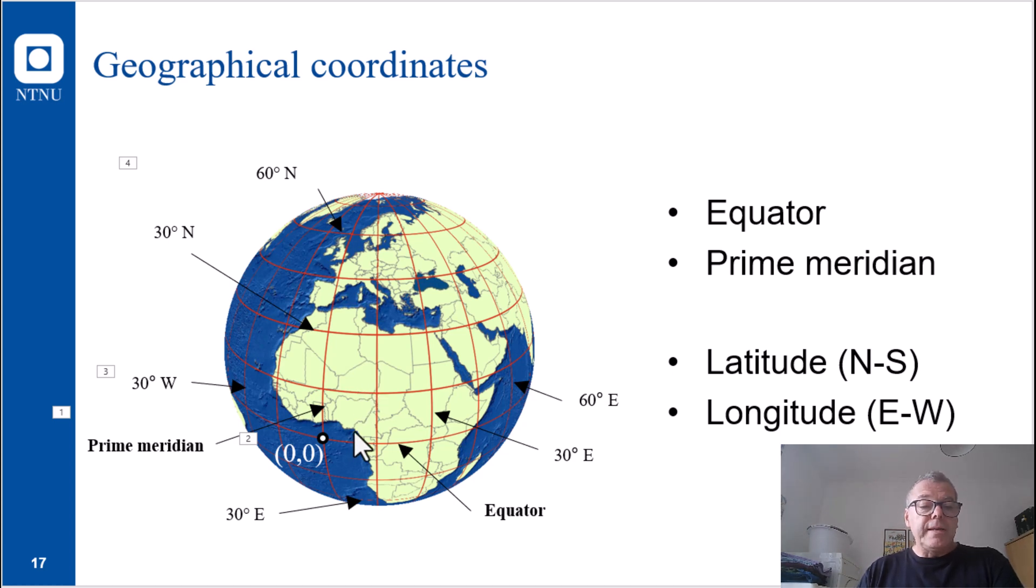Before 1884, there were several alternative prime meridians, one going through Madrid, another one going through Paris. But in 1884, the international community agreed to use the Greenwich meridian as the prime meridian.